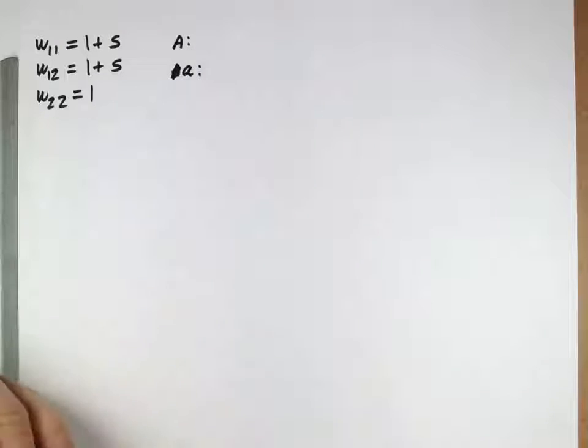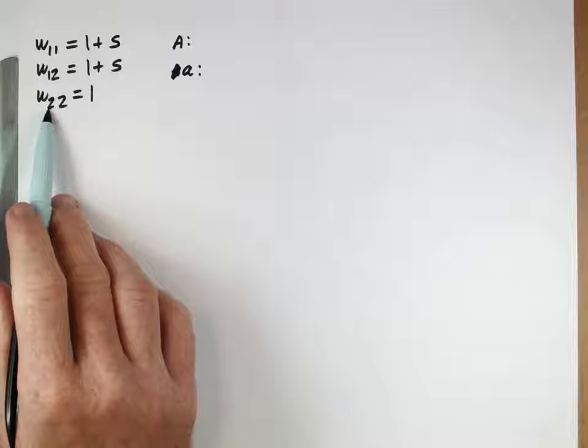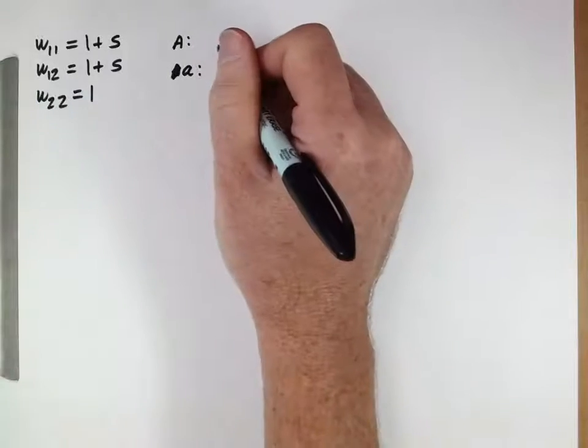The capital A allele is, well, those homozygotes are better than this homozygote, right? Because their fitness is higher. So, they're advantageous.